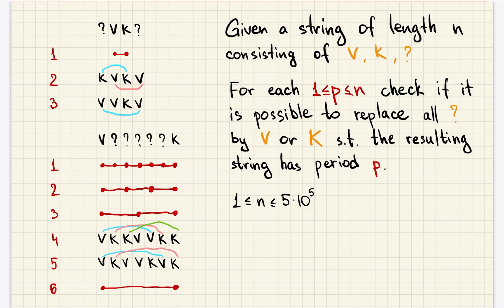For example, for period equal to 1 it's obvious that all the characters should be equal and we cannot do that. But for period equal to 2 it might not be obvious that it is not possible, but actually we can see that first and third characters should be equal, then third and fifth characters should be equal, and fifth and seventh characters should be equal.